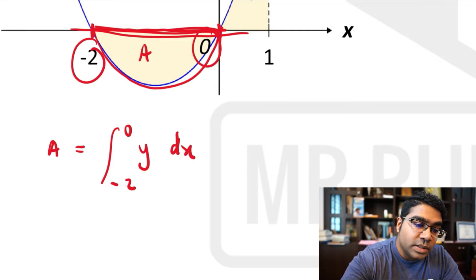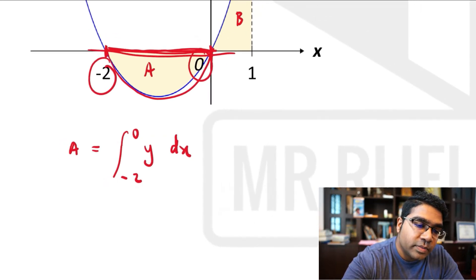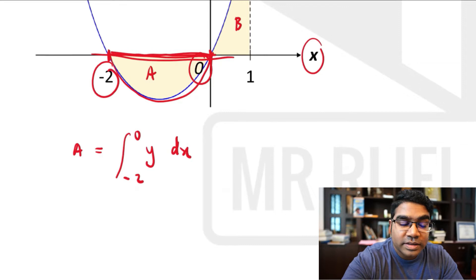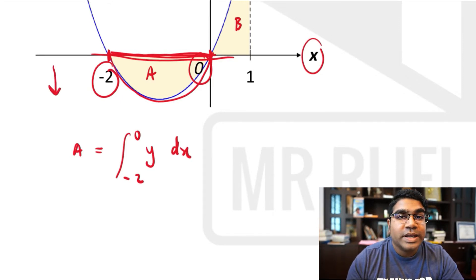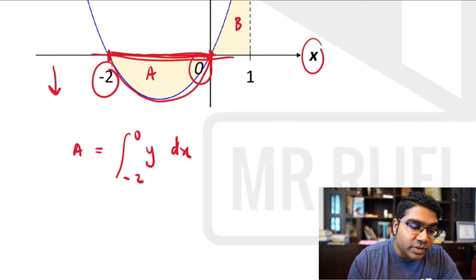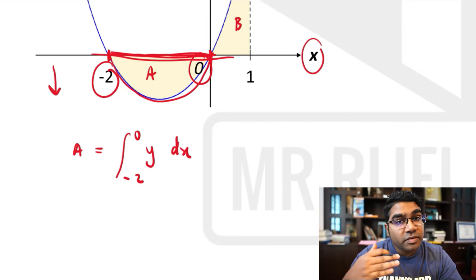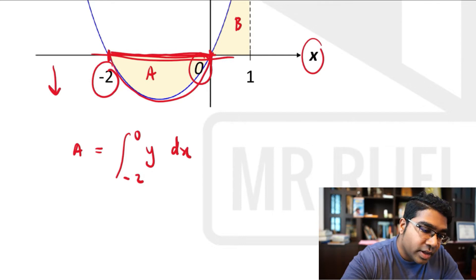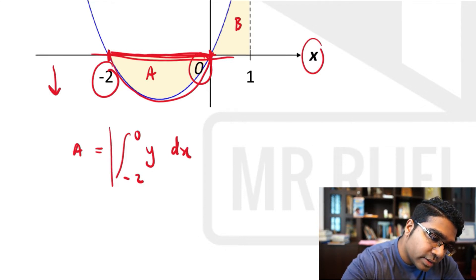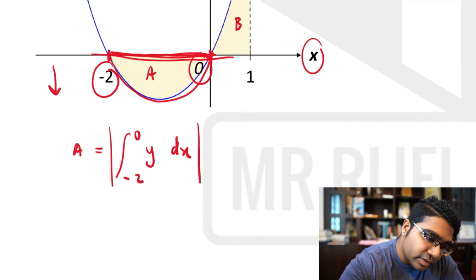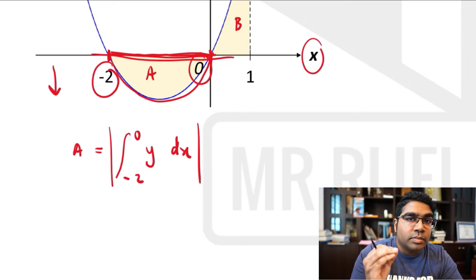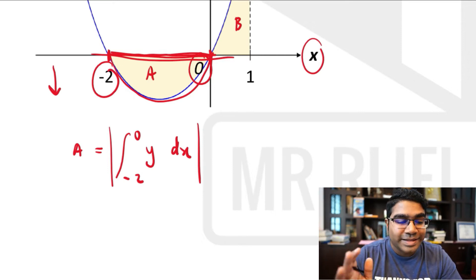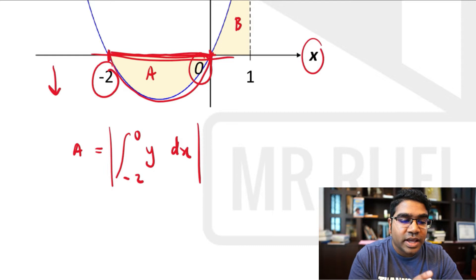However, since we are integrating with respect to x, areas that are under the x-axis — below the x-axis — will actually be negative. The value of the integral you get here will be negative. However, area values cannot be negative, and therefore we need to add the modulus sign. The magnitude is still the same, but the value must now become positive. This is how we find the area for A.